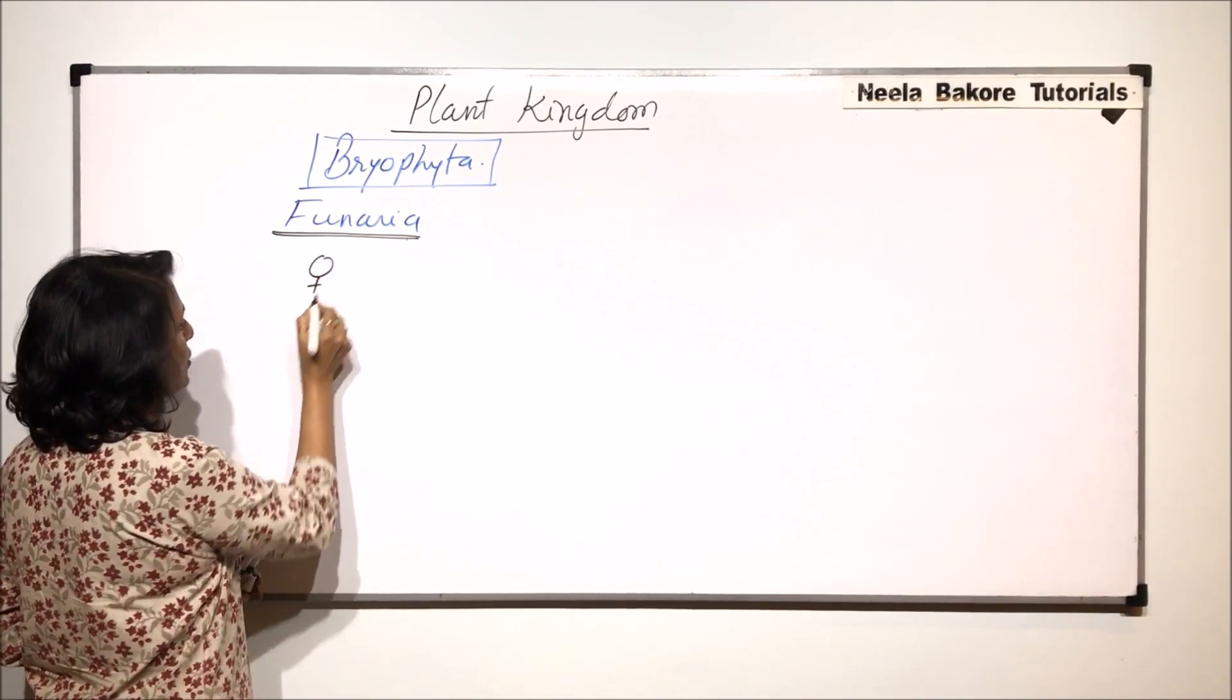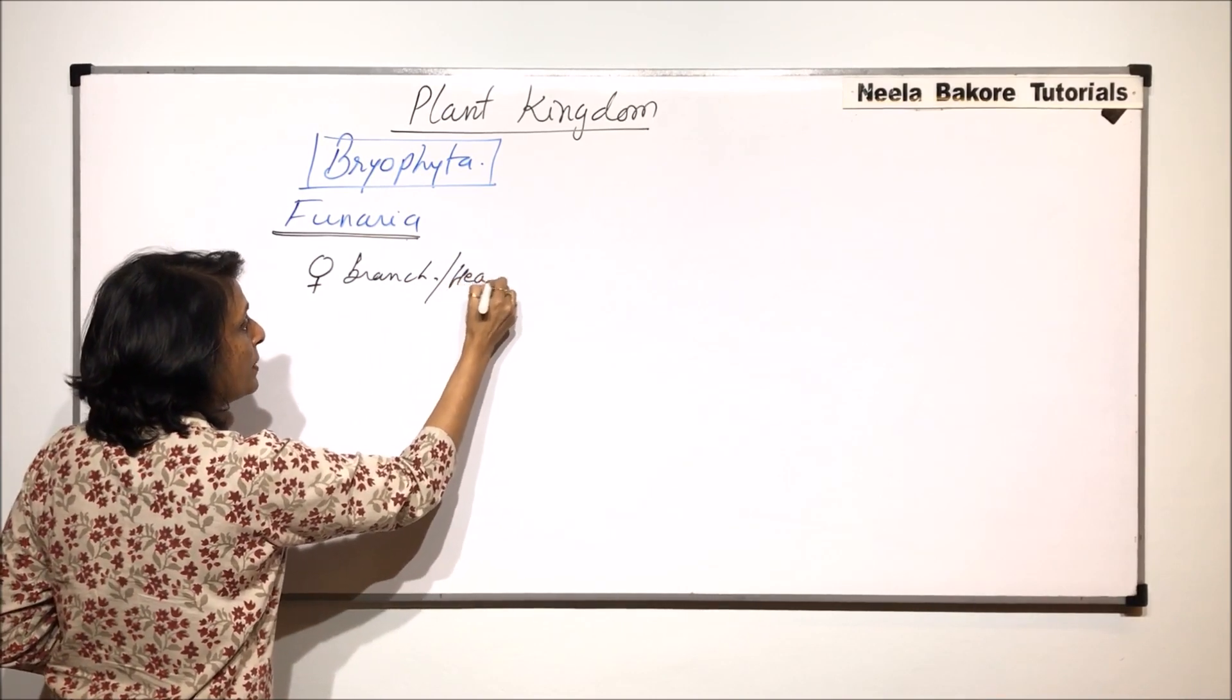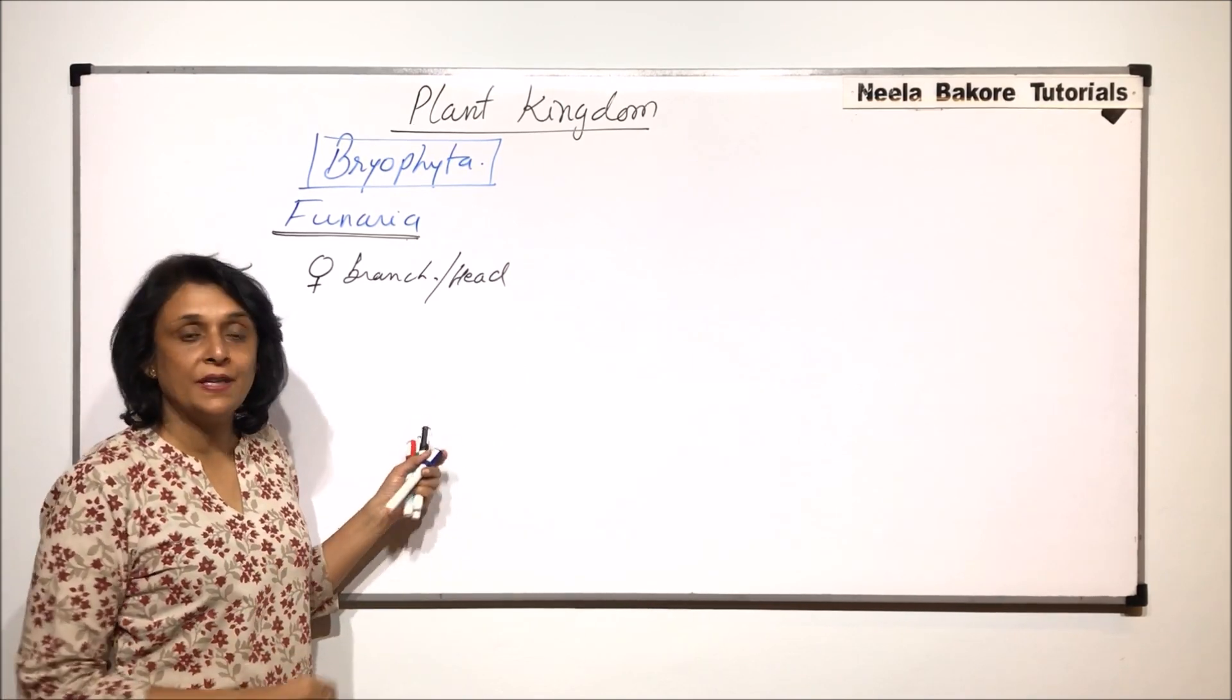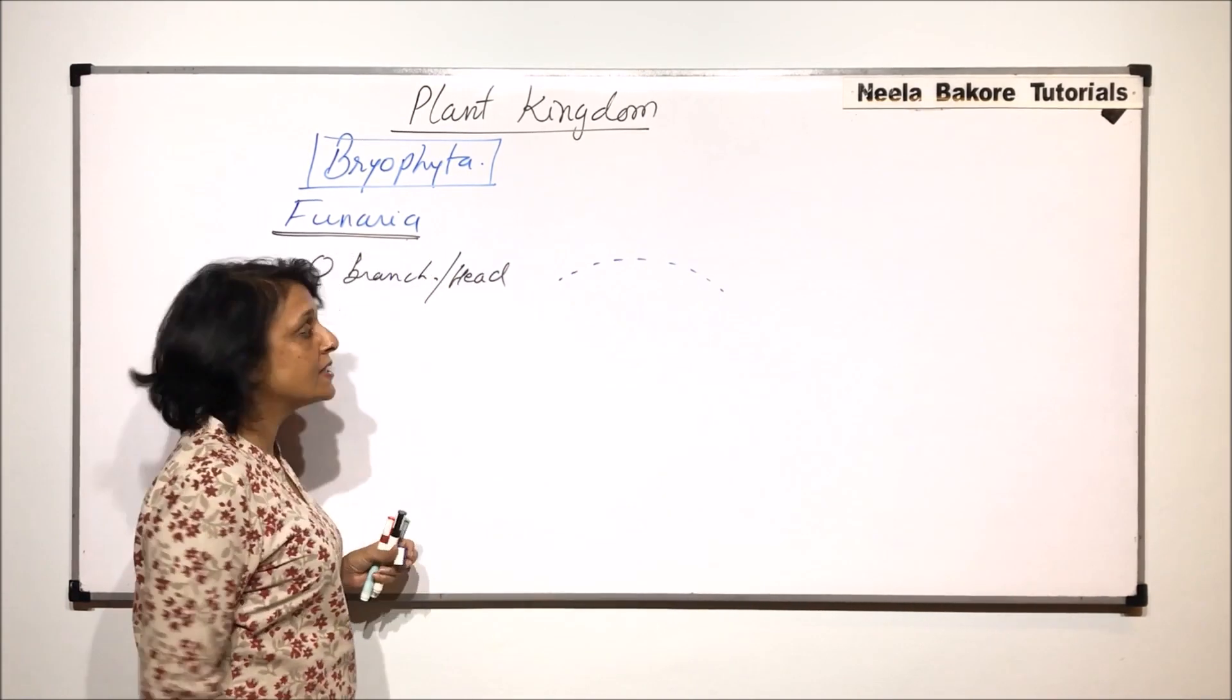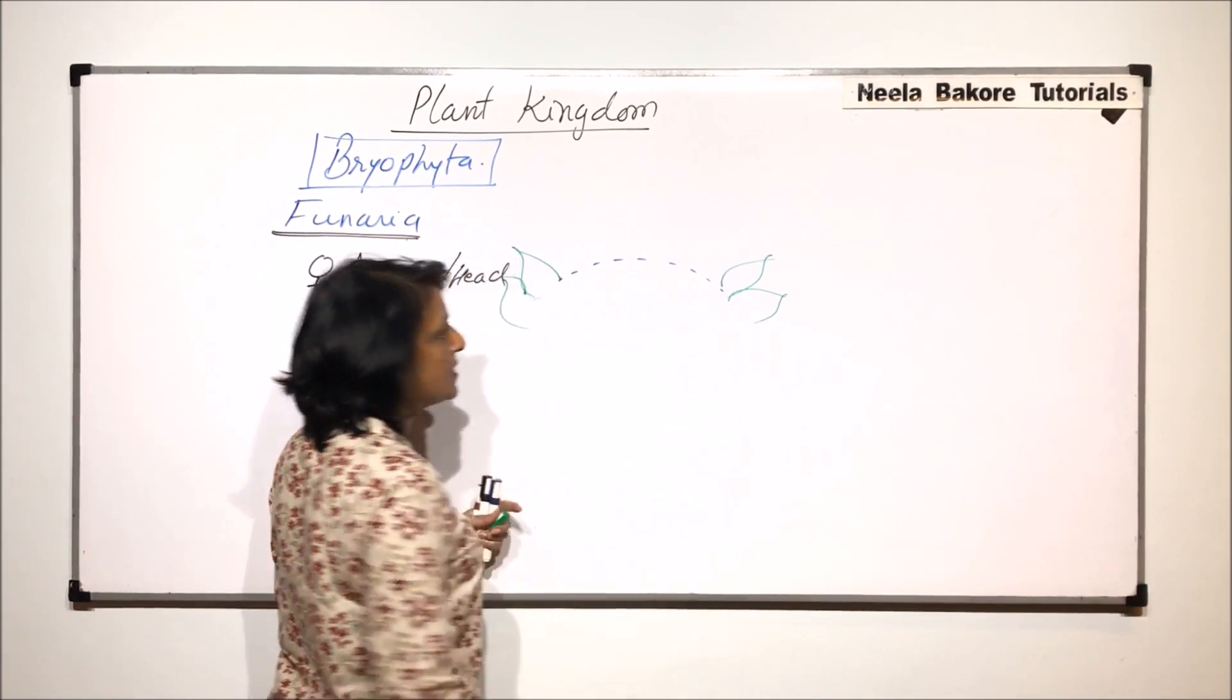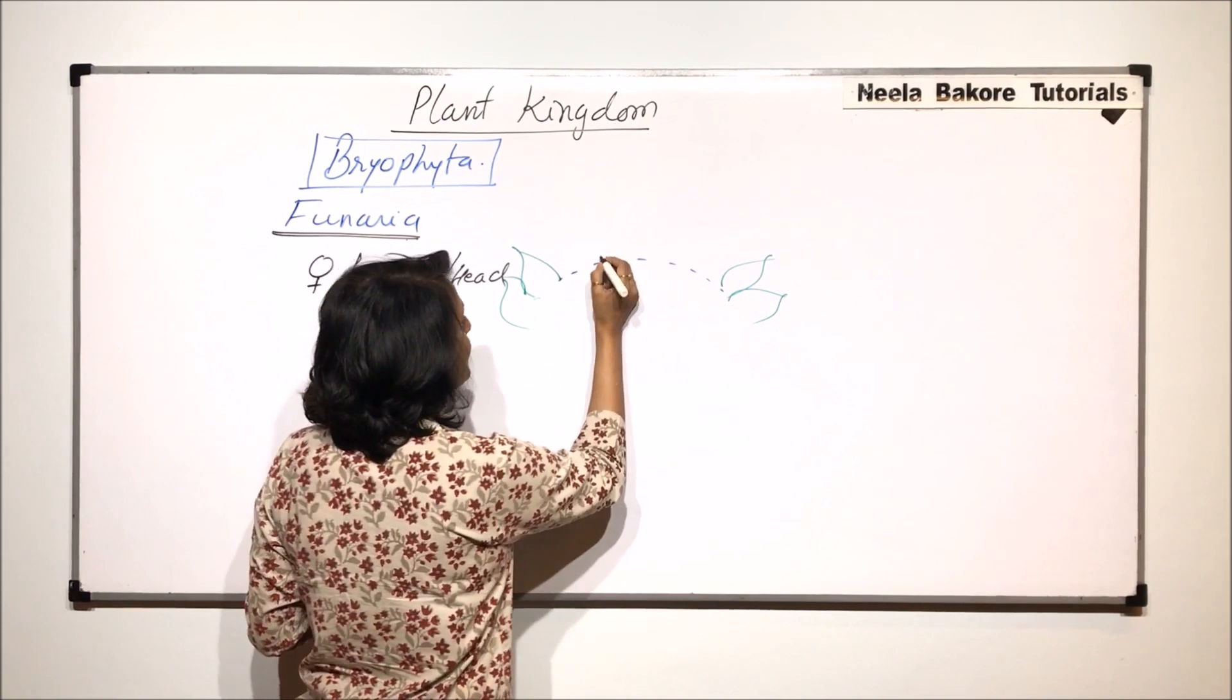We have seen the structure of the male head or branch. So if we talk of the female branch or the tip which has the head, there are few things which are similar to the male head but there are many different things. One thing which is similar is that this is also slightly convex and all around it, it is surrounded by those large leaves. So the function of these leaves is same, it is going to protect the structure. The central part is going to have the female sex organ.